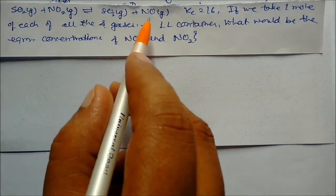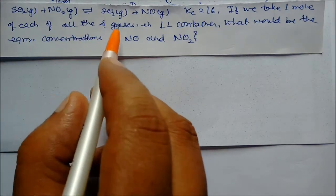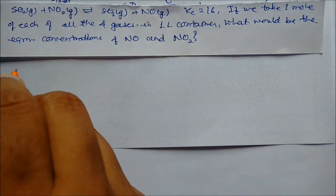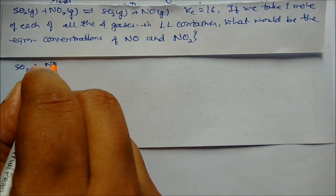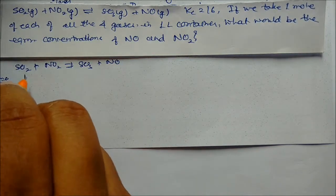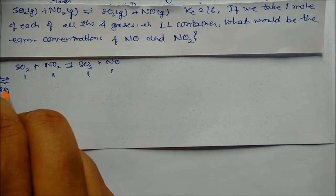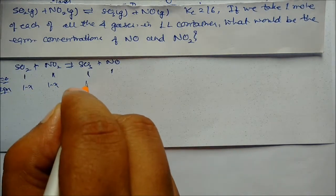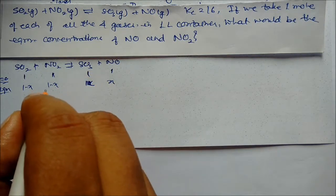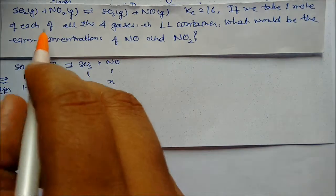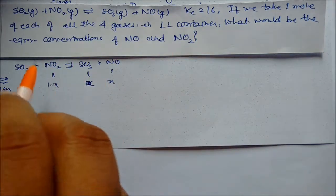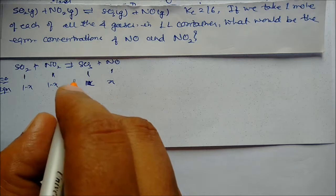Next problem: SO₂ + NO₂ ⇌ SO₃ + NO, with Kc = 16. If 1 mol each of all four gases is taken in a 1 liter container, find equilibrium concentrations of NO and NO₂. At t = 0: all species = 1 mol. At equilibrium: SO₂ = 1 − x, NO₂ = 1 − x, SO₃ = 1 + x, NO = 1 + x.